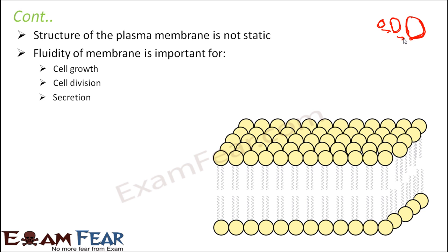Secretion: the flow of materials through the plasma membrane is indicative of the fluidity of the membrane. Since the membrane is slightly movable, it becomes easy for materials to pass through it and also to secrete substances. Formation of cell junctions: if you want to connect two cells, there has to be some flexibility from both plasma membranes, and that is possible because of the fluidity of the membrane. These are some of the properties which favor the fact that plasma membrane is fluidic in nature to some extent.